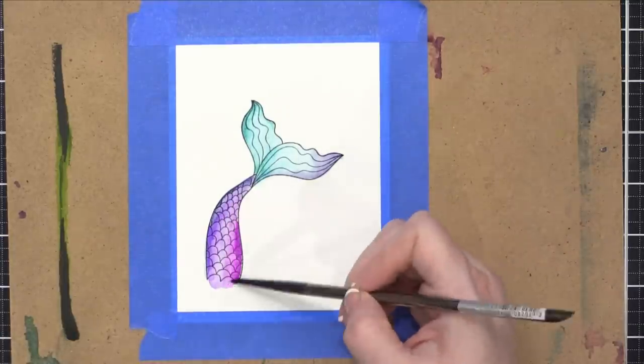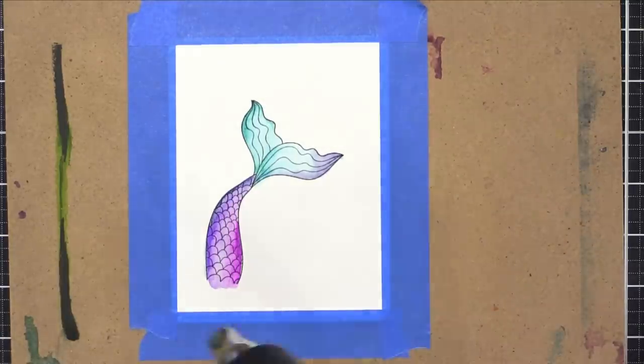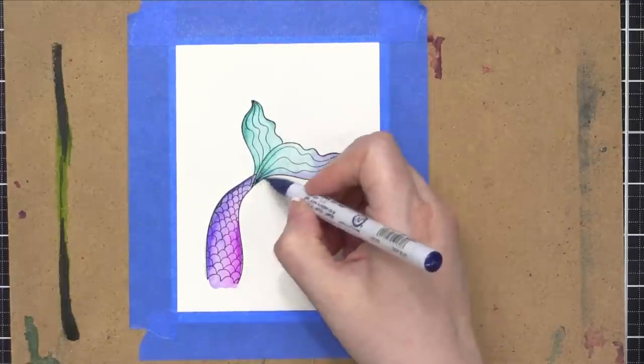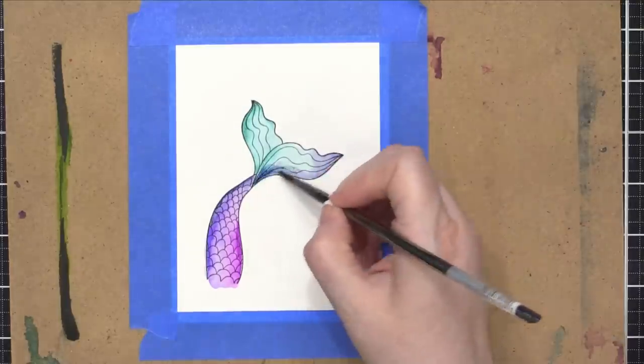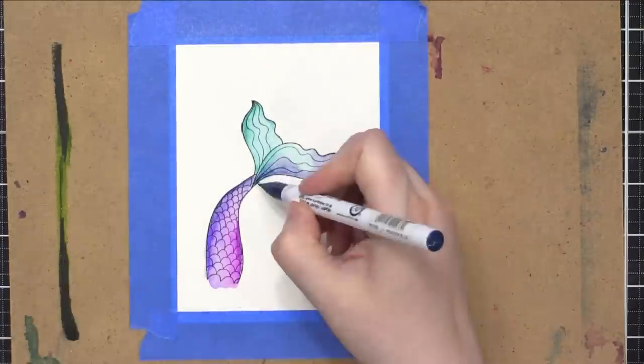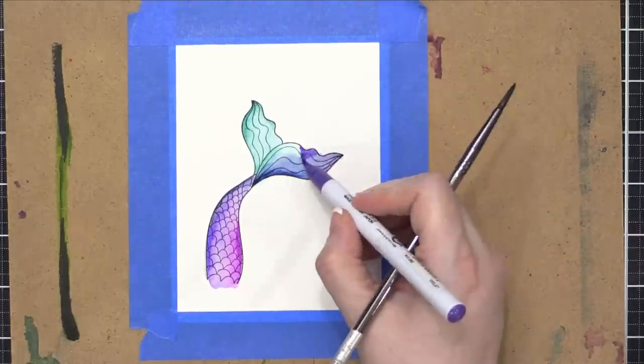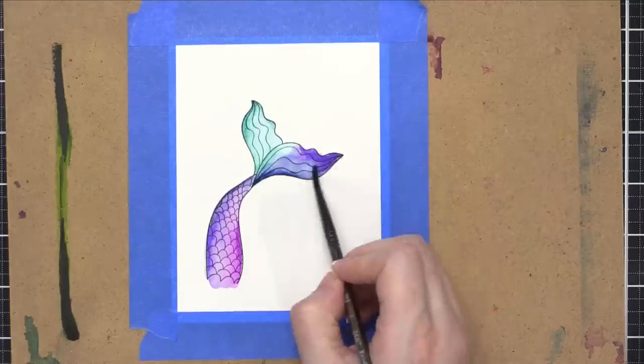I find that these watercolor markers work best on Bristol paper. Whenever I've tried them on watercolor paper, it's sometimes hard to get the colors to move freely, but Bristol paper makes it super easy. You notice that that blue shade, the deep blue, was really dry. I ended up bringing in some peacock blue just to get that color moving.